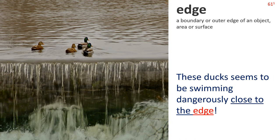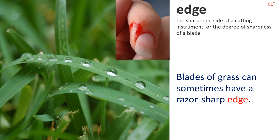Edge — Definition 1: a boundary or outer edge of an object's area or surface. These ducks seem to be swimming dangerously close to the edge. Definition 2: the sharpened side of a cutting instrument or the degree of sharpness of a blade. Blades of grass can sometimes have a razor-sharp edge.